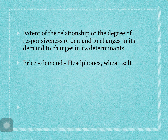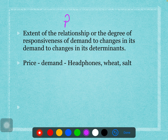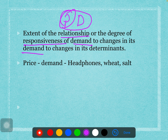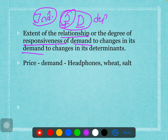In technical economics terms, consider the relationship between two variables — for example, price and demand. What is the responsiveness of demand whenever price changes? Price is the independent variable and demand is the dependent variable. Whenever the independent variable changes, the dependent variable — demand — also changes. How much it is going to change, how much it is going to respond when price changes — if we measure that, it is called elasticity of demand.